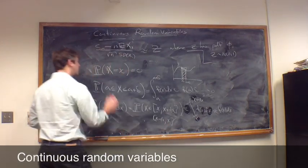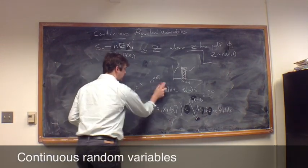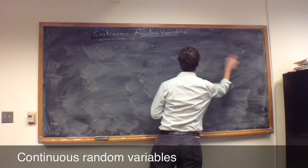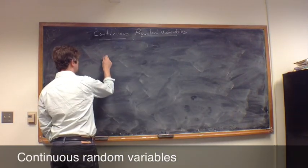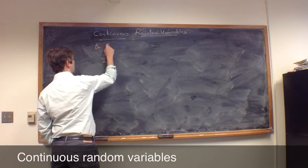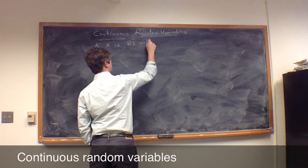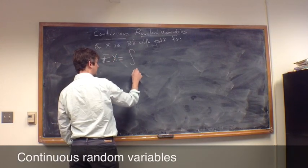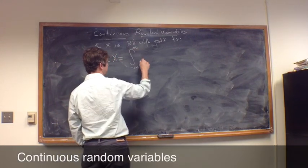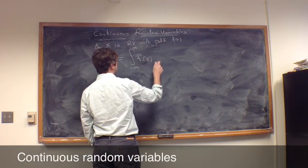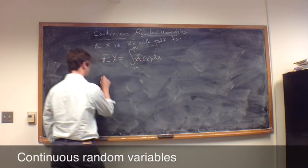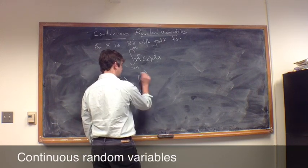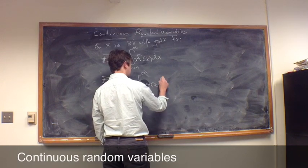And just like before, we can re-talk about everything we've already talked about, such as expectation, variances, none of these changes. The only thing we have to do is change what we mean by expected value. So, for instance, the expected value, so if x is a random variable with pdf f of x, then the expected value of x is the integral over the entire range from minus infinity to infinity of f of little x times x dx. And in general, the expected value of some function of the random variable will be the integral from minus infinity to infinity of g of little x, f of x.